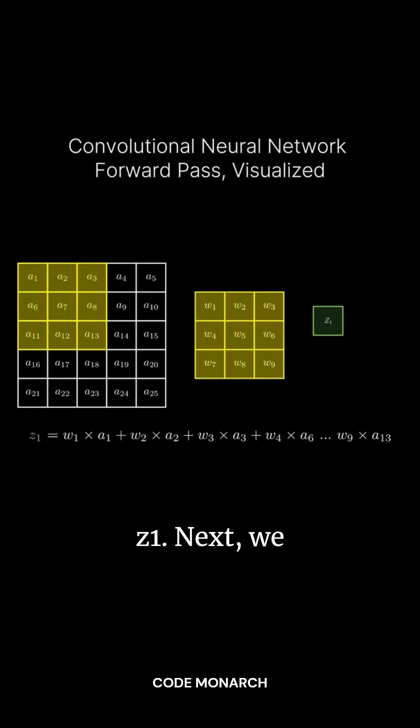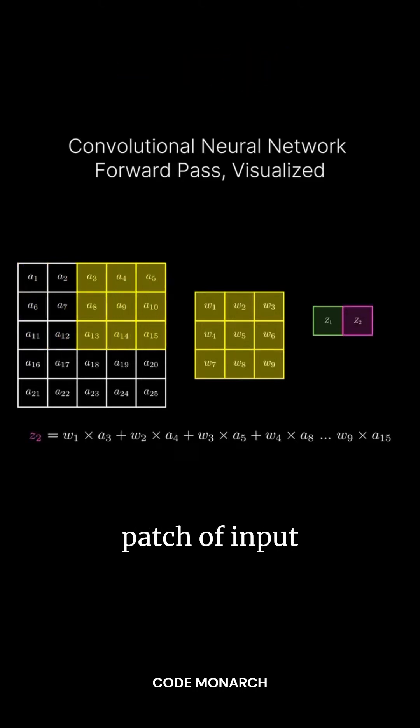The result is an output called Z1. Next, we slide the kernel two steps to the right, multiplying the weights with the new patch of input values.